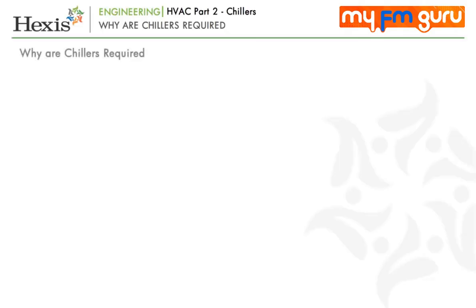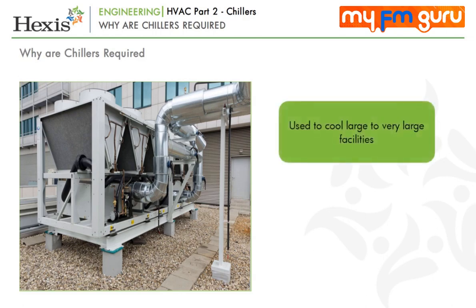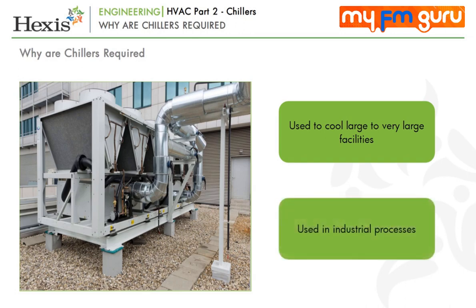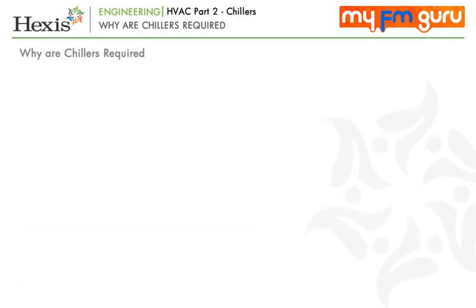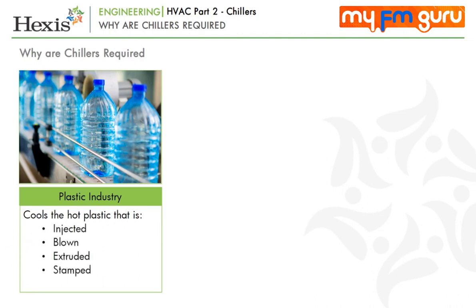Now let us understand in detail why we need chillers. As we have learned in Part 1 of this HVAC module, chillers are used to cool large to very large facilities. It is much easier and cheaper to use water than running refrigerant piping all over the building. Chillers are also used in industrial processes — either to provide cooling to equipment that generates a lot of heat but needs cool environments for operation, or to provide specific temperatures with high precision for certain processes. For example, in the plastic industry, a chilling system cools the hot plastic that is injected, blown, extruded or stamped.